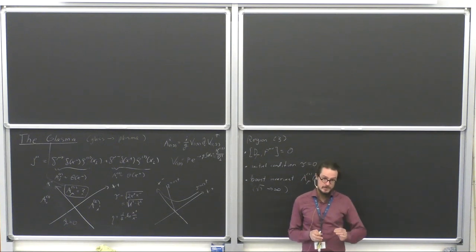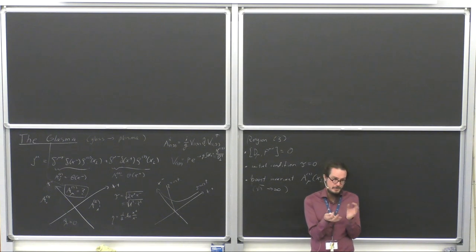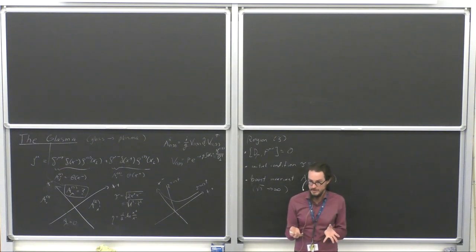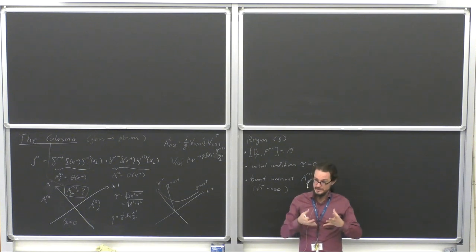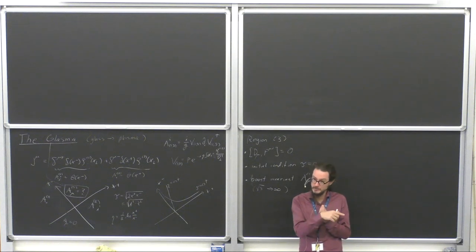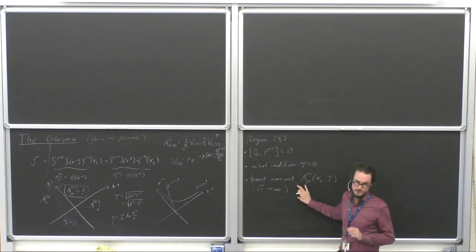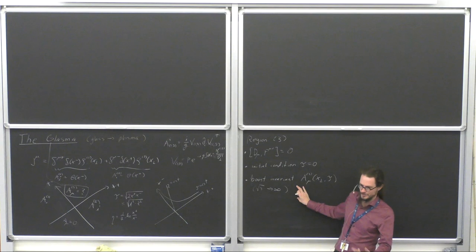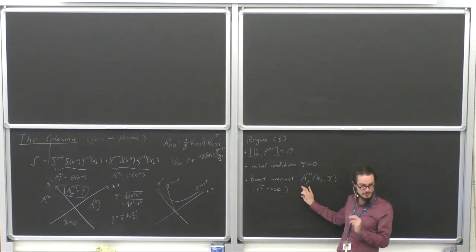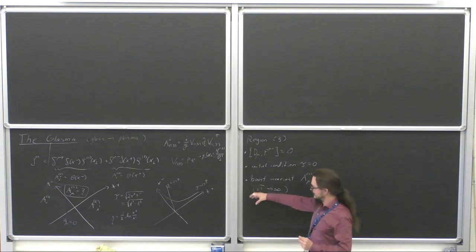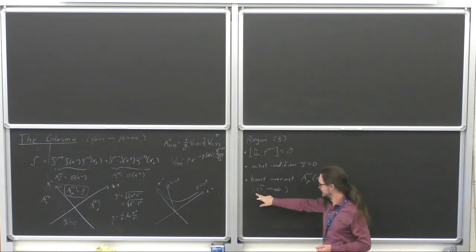That is much stronger because it means that even in Bjorken hydrodynamics, if your hydrodynamical solution is boost invariant, the fluid is still isotropic in its local rest frame — the particles in a Bjorken hydro fluid have momentum in the z-direction. They have an isotropic distribution of momentum because they are a thermal system in the local rest frame. Here, these gluons do not have momentum in the z-direction. This is a stronger condition than boost invariance in hydrodynamics, but it is the condition that follows from the fact that sqrt(s) is infinite.